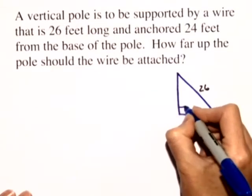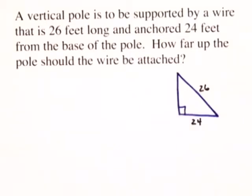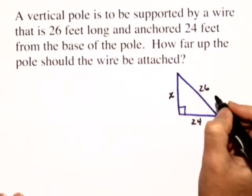This can be represented by a right triangle. So notice in this right triangle, the missing piece is the vertical pole, which is X.